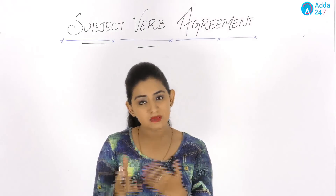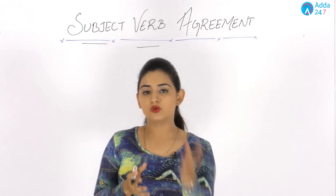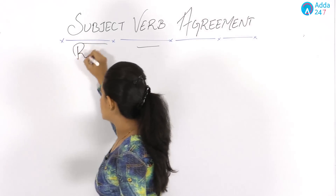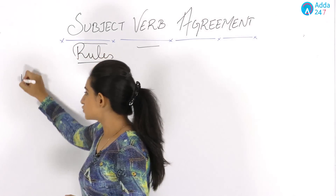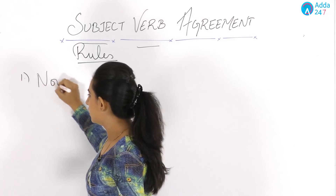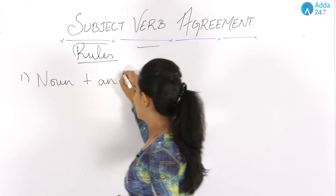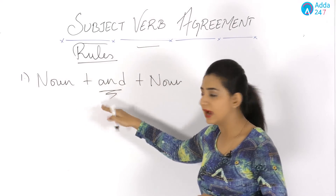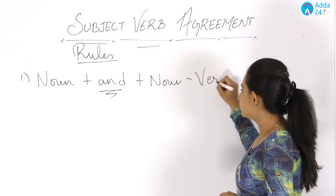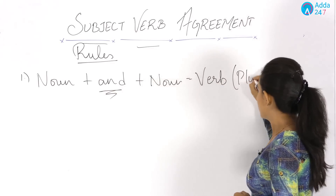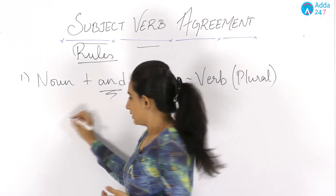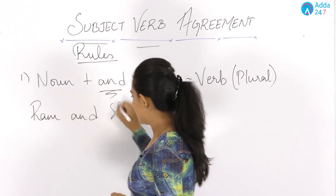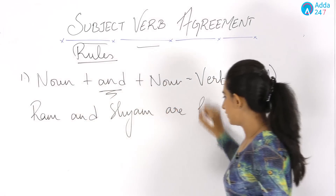The subject agrees with the verb — whichever subject we use, the verb will be used according to it. The first rule says if we have two nouns joined by 'and', the verb used should be plural. For example: 'Ram and Sham are friends.'